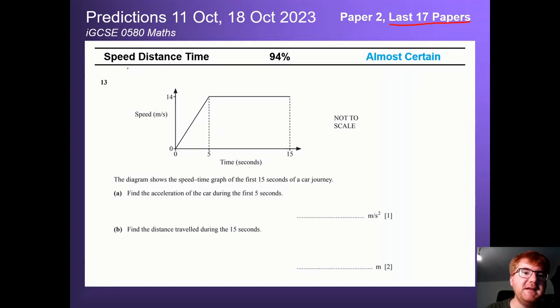You can see here speed distance time comes at a whopping 94%. Now this can vary in terms of the style of question. They'll give you a speed time graph, they could give you a distance time graph, or they could get you to just use the basic formula triangle, the basic formula of speed equals distance over time. This can come in a few different ways but these could be easy marks in the bag for you.